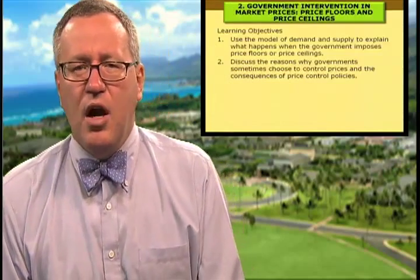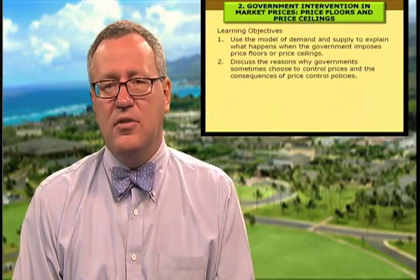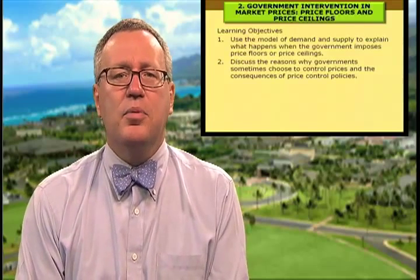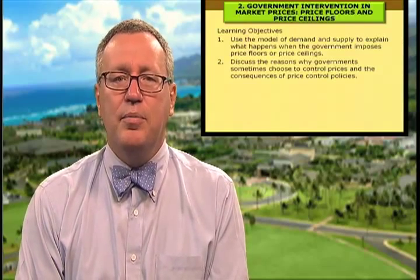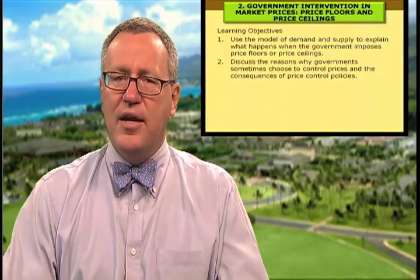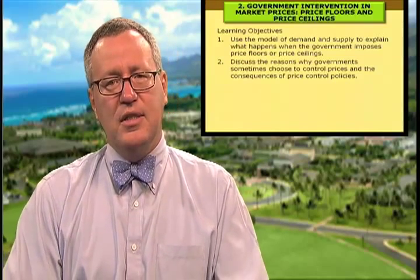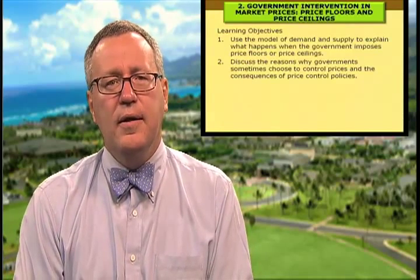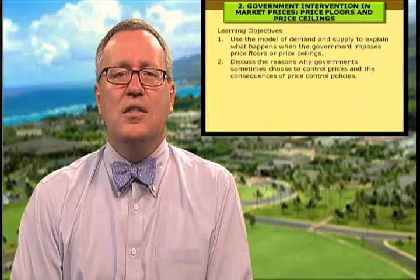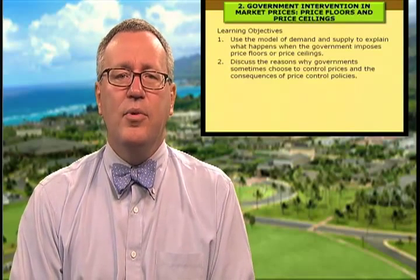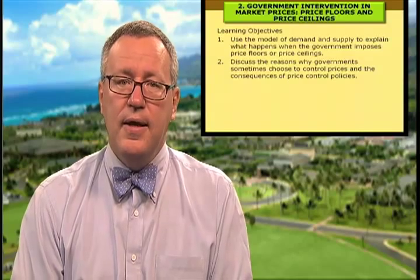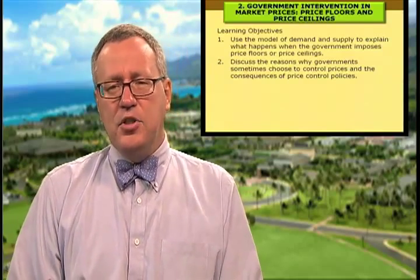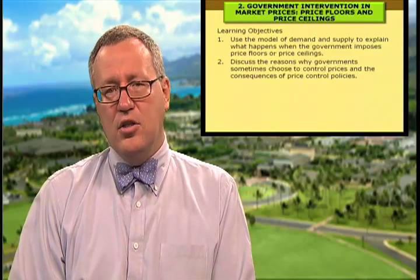Now we're going to discuss some very interesting applications of supply and demand. First, we'll use the model to explain what happens when government imposes price floors and price ceilings — the government's involvement in the market when it sees market failure. Second, we'll discuss the reasons why governments sometimes choose to control prices and the consequences of those price control policies. What you see is a very interesting law of unintended consequences.